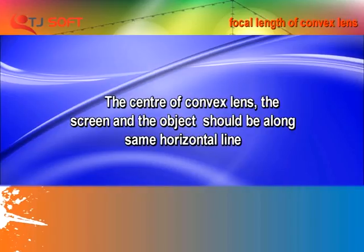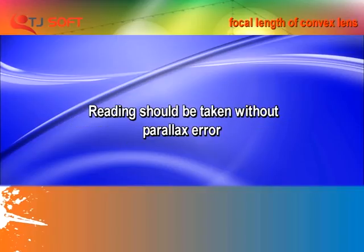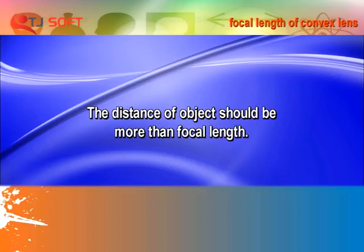Precautions: The center of the convex lens, the screen, and the object should be along the same horizontal line. The lens should be vertical in the V Stand. Readings should be taken without parallax error. The distance of the object should be more than the focal length.